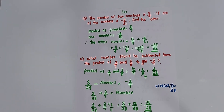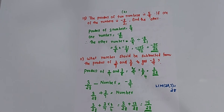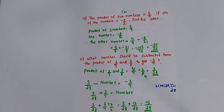11th question: what number should be subtracted from the product of 2 by 7 and 3 by 8 to get minus 3 by 7? First, find the product of 2 by 7 and 3 by 8. The product of 2 by 7 and 3 by 8 equals 3 by 28.